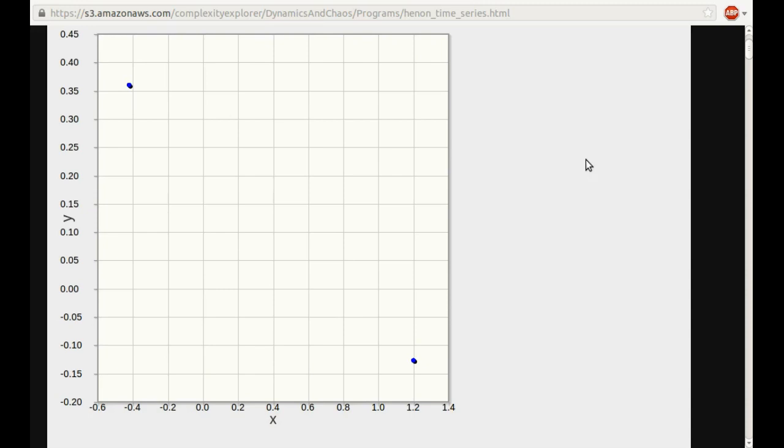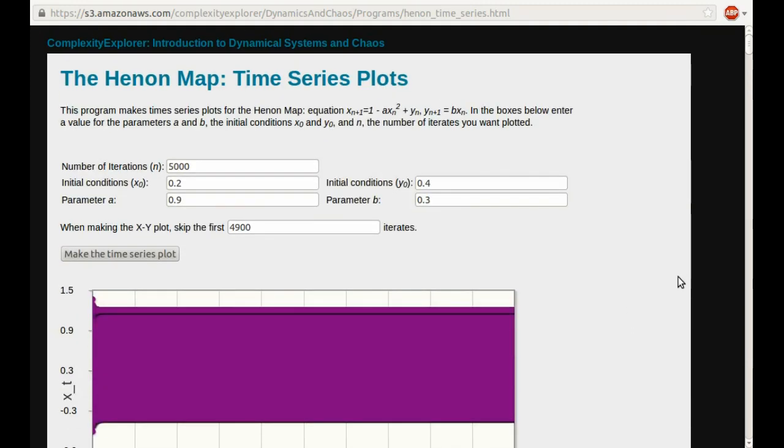So for the logistic map, we did a final state diagram for a periodic orbit, and it just had two, or four, or eight, however many points it was, corresponding to the periodicity of the orbit. We see the same thing here, but now the points live on a plane and not on a line. So we'll do a lot more with the Hénon map in the next unit, where we'll see what chaotic behavior in two and three dimensions look like, and we'll see strange attractors.